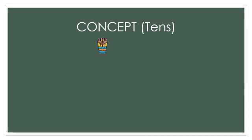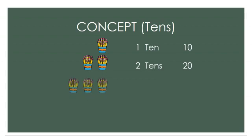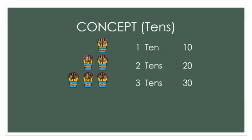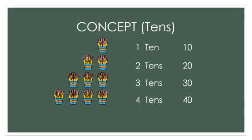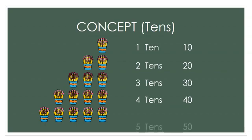As you can see, this glass has 10 pencils, it means 10. Now there are 2 glasses of 10 pencils, it means 20 — 2 tens is equal to 20. Now you can see there are 3 tens, it means 30. There are 4 tens, it means 40. Now there are 5 tens, it means 50.